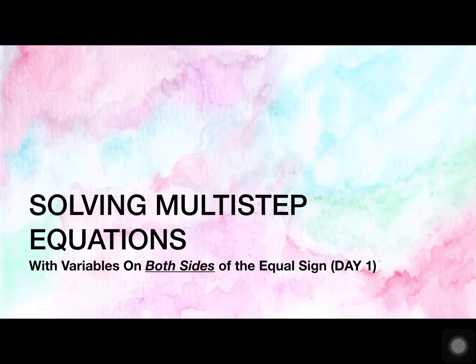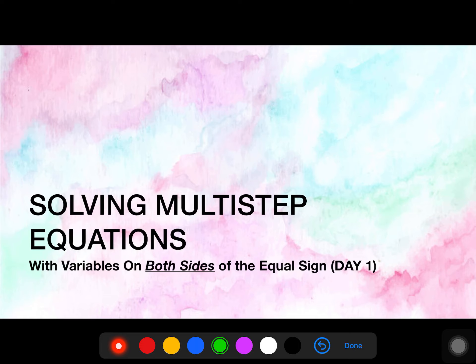Hey guys, today we're going to continue talking about how to solve equations. Today we're going to talk about what happens when you see variables on both sides of the equal sign. Up until now, we've only seen equations that only have variables on one side, so today we're going to have variables on both sides of the equal sign.